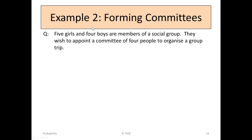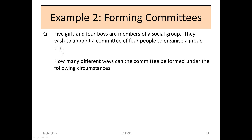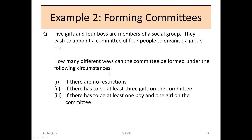Example 2. Forming committees. 5 girls and 4 boys are members of a social group. They wish to appoint a committee of 4 people to organise a group trip. How many different ways can the committee be formed under the following circumstances? If there are no restrictions. If there has to be at least 3 girls on the committee. Or if there has to be at least 1 boy and 1 girl on the committee.